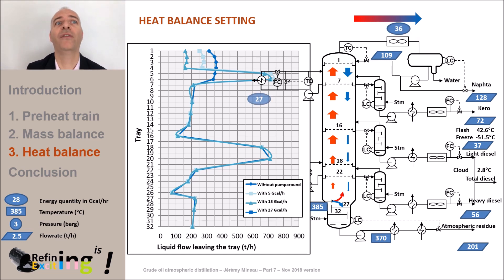Let's increase this amount of energy saved to 27 gigacalories per hour. At this value we dry out the trays of the top zone. We know that we have reached our maximum.